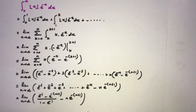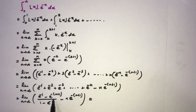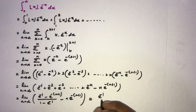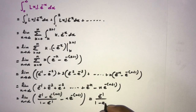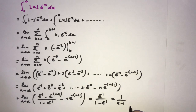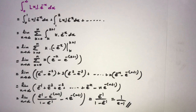Plugging in the limit as n approaches infinity: e to the minus infinity is 0, so the term e to the minus (n+1) goes to 0, and n times e to the minus (n+1) also goes to 0. We are left with e to the minus 1 over (1 minus e to the minus 1), which equals (1/e) divided by (1 minus 1/e), simplifying to 1 over (e minus 1). This is the answer for this integral. If you like my videos, please subscribe to this channel. Thank you.